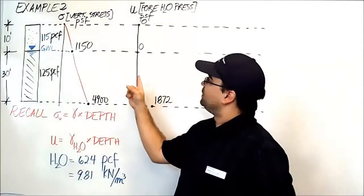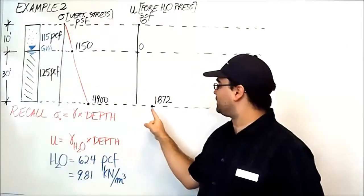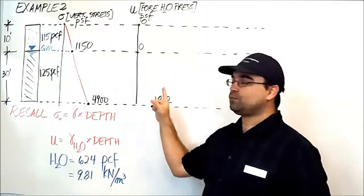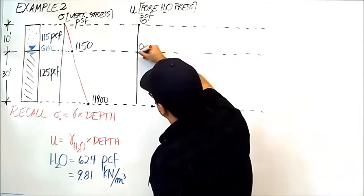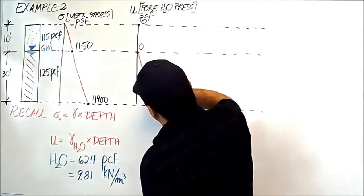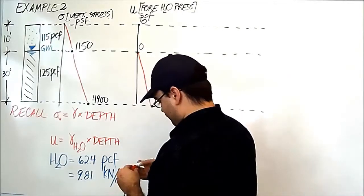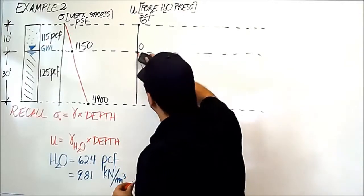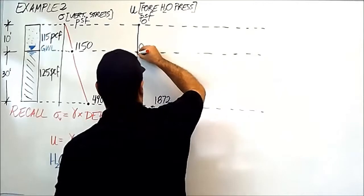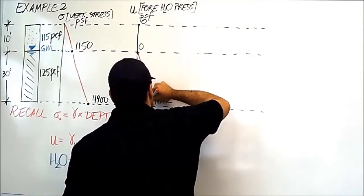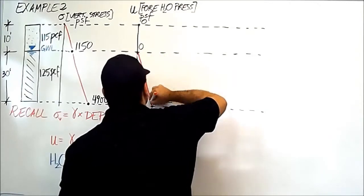So just like we did for vertical pressure, how do we connect the two lines, the two dots? We're going to use a straight line. So we're going to go from 0 to 1,872 with a straight line. Attempt number two. There we go.